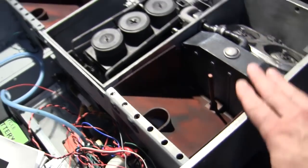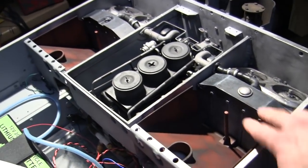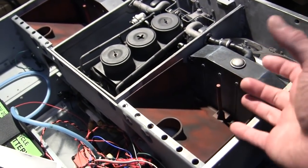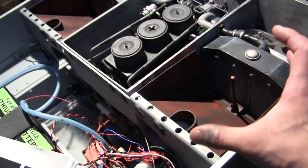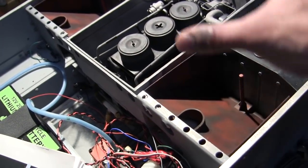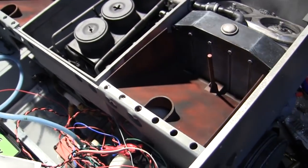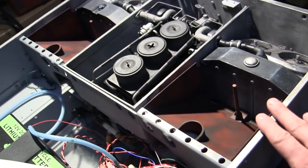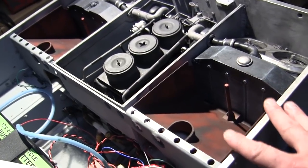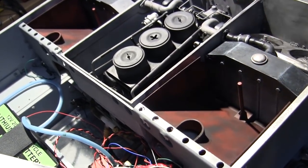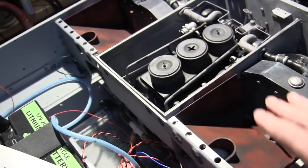To put things in perspective, on the real Tiger One the ducts are actually connected to the fan grills, and the whole fan grill and duct unit would be one drop-in installation piece. On the tank here for the model, this was not done. Instead, the ducts are mounted to the hull.